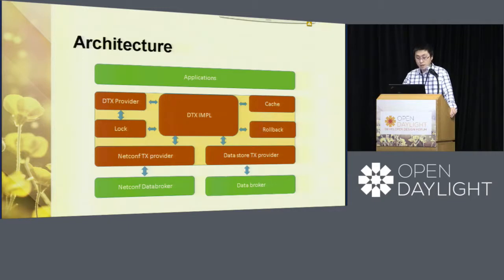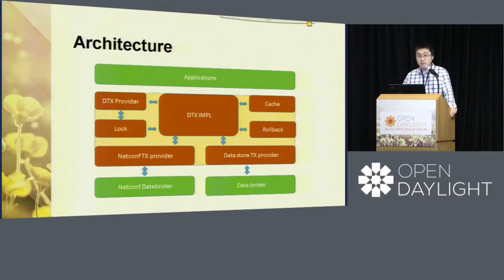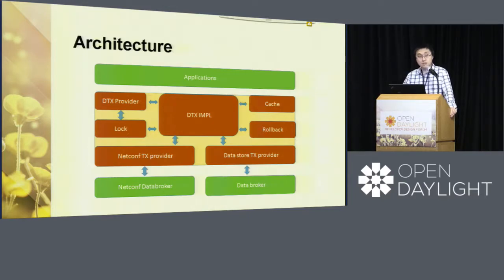Once the application gets the service, the provider will lock all the devices that the application will operate on, because transactions are exclusive. On the right-hand side there are two blocks: one is called the cache. The reason DTX can keep the transaction atomic is that before each operation — whether write or delete — we first read the data from the device and save it in the cache. If some error happens, the data saved in the cache will be rolled back to the previous state, written from cache back to the device. The cache is per transaction, so different transactions won't interrupt each other.